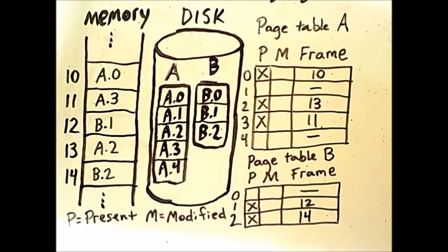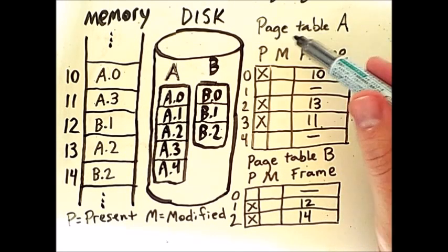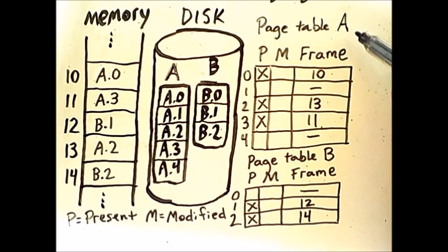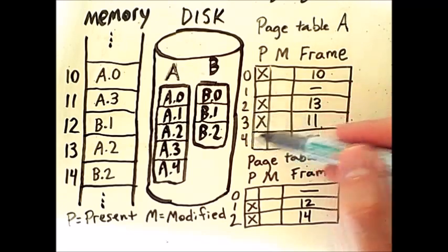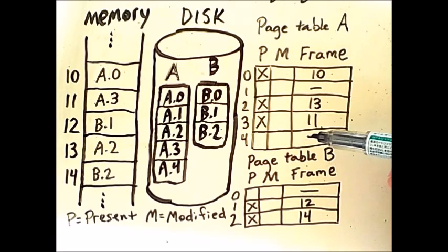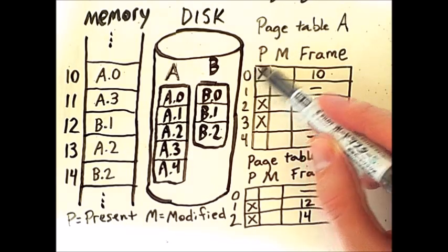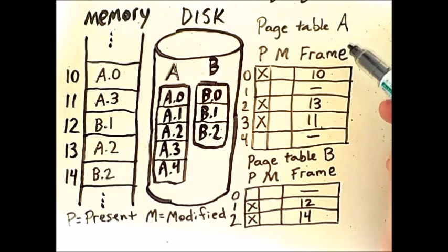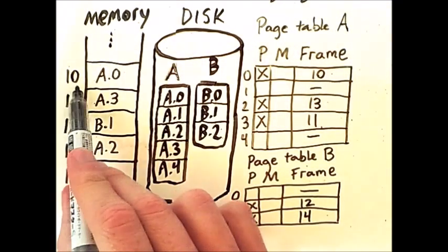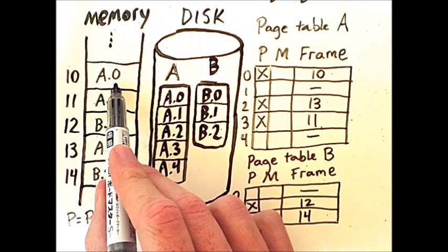As with simple paging, each process has its own page table. The page table for process A indicates which frame in memory contains each page of the process. However, unlike simple paging, virtual memory paging allows for certain pages to be absent. So this table indicates that page 0 of process A is located at frame 10 of memory. And sure enough, if we look at frame 10, we see that page A0 is there.